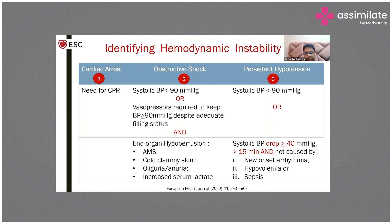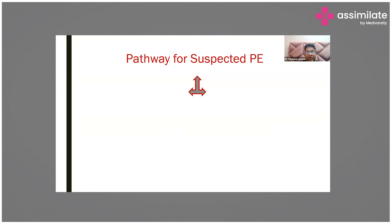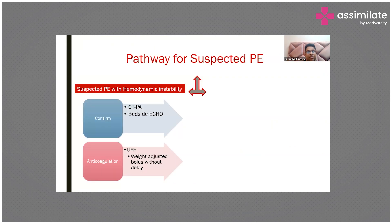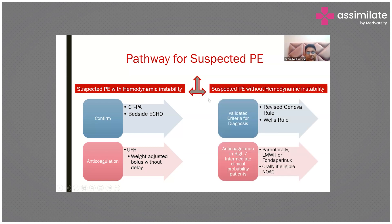This hemodynamic parameter must be assessed at the beginning of evaluation. For any patient coming in with suspected PE, you have to determine whether they are hemodynamically stable or unstable. You have two scenarios: hemodynamically unstable, requiring immediate action, and hemodynamically stable, which means you have time to further evaluate the patient.